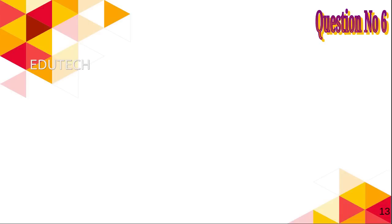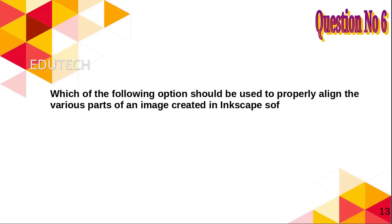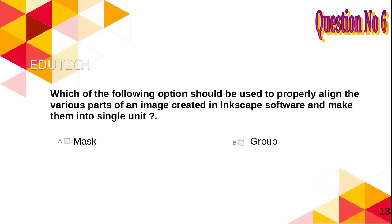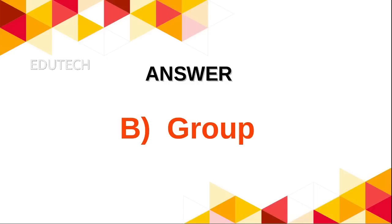Question 6: Which of the following options should be used to properly align the various parts of an image created in Inkscape software and make them into a single unit? A. Mask, B. Group, C. Ungroup, D. Pattern. Answer: B. Group.